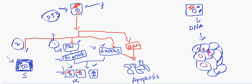The cell would enter a phase of senescence so that it does not undergo any further cell division. This is the second mechanism through which p53 can prevent the cell from entering malignancy.